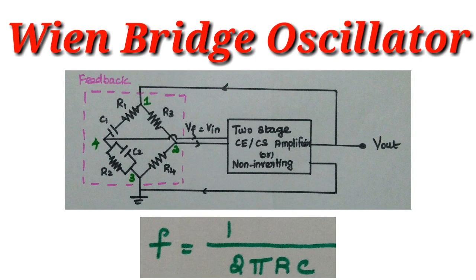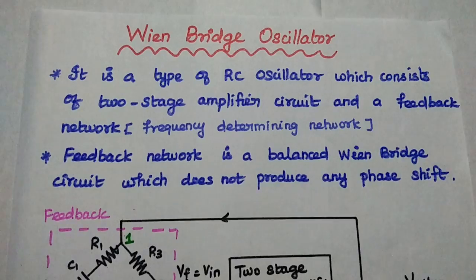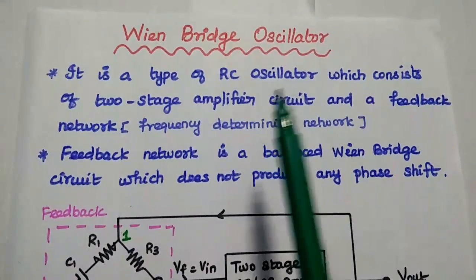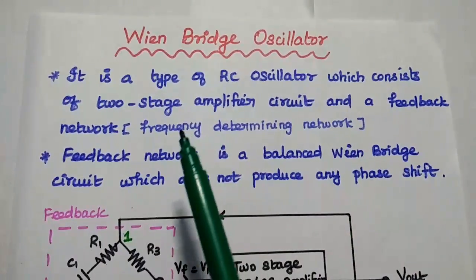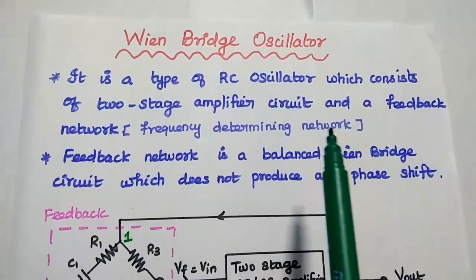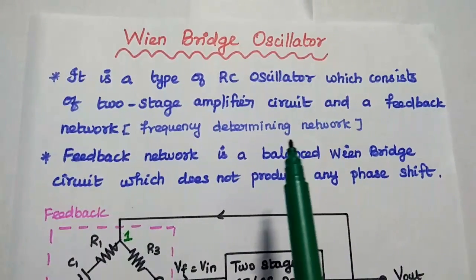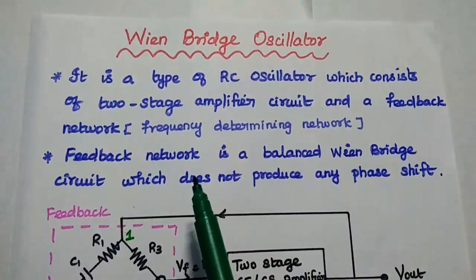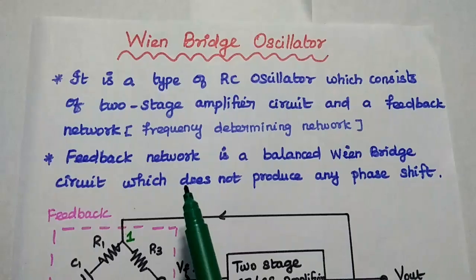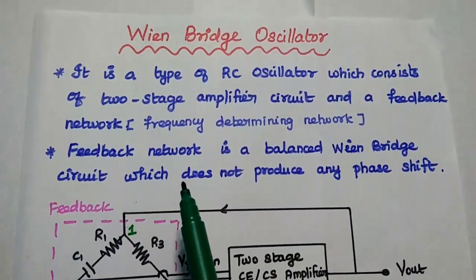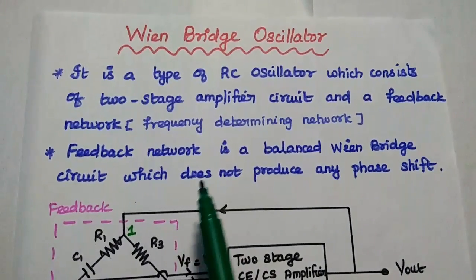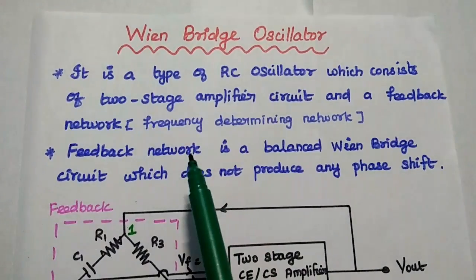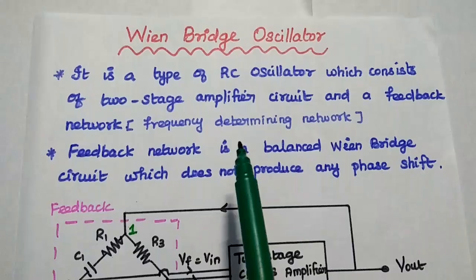Now we are going to discuss the Wainbridge oscillator and its derivation in detail. The Wainbridge oscillator is a type of RC oscillator which consists of a two-stage amplifier circuit and a feedback network. The major advantage of this Wainbridge oscillator over the RC phase shift oscillator is that the frequency can be varied by varying the values of capacitance in the feedback network.